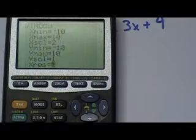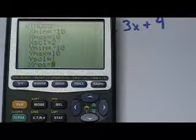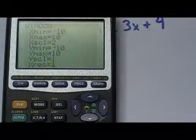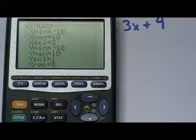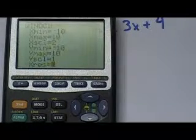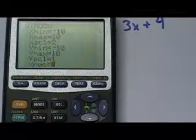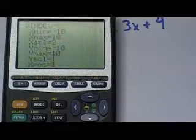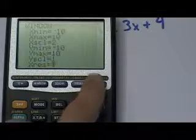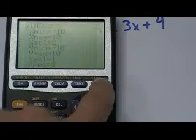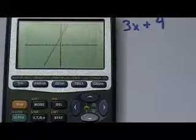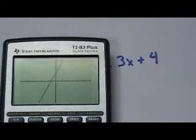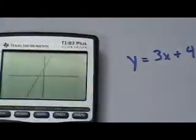The last setting is Xres, the resolution of the graph. The highest resolution is 1. The lower you set your resolution, the grainier the graph looks. Normally we just keep this set at 1 all the time. Now I'm going to press the graph button, and we see I've graphed a straight line — that's my equation, Y equals 3X plus 4.